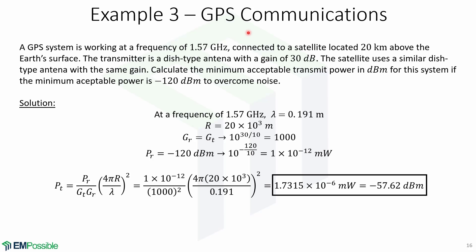Now the last example involves GPS communications. A GPS system is working at a frequency of 1.57 GHz, connected to a satellite located 20 kilometers above the Earth's surface. The transmitter is a dish type antenna with a gain of 30 dB. The satellite uses a similar dish type antenna with the same gain. Calculate the minimum acceptable transmit power in dBm for this system, if the minimum acceptable power is -120 dBm to overcome noise.